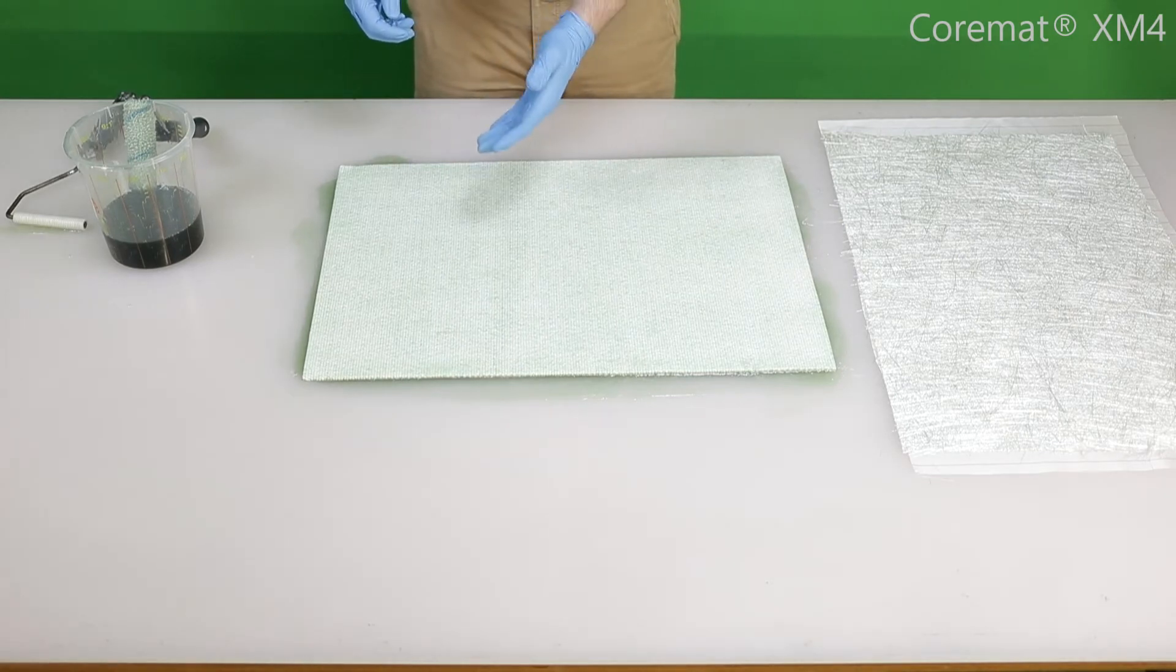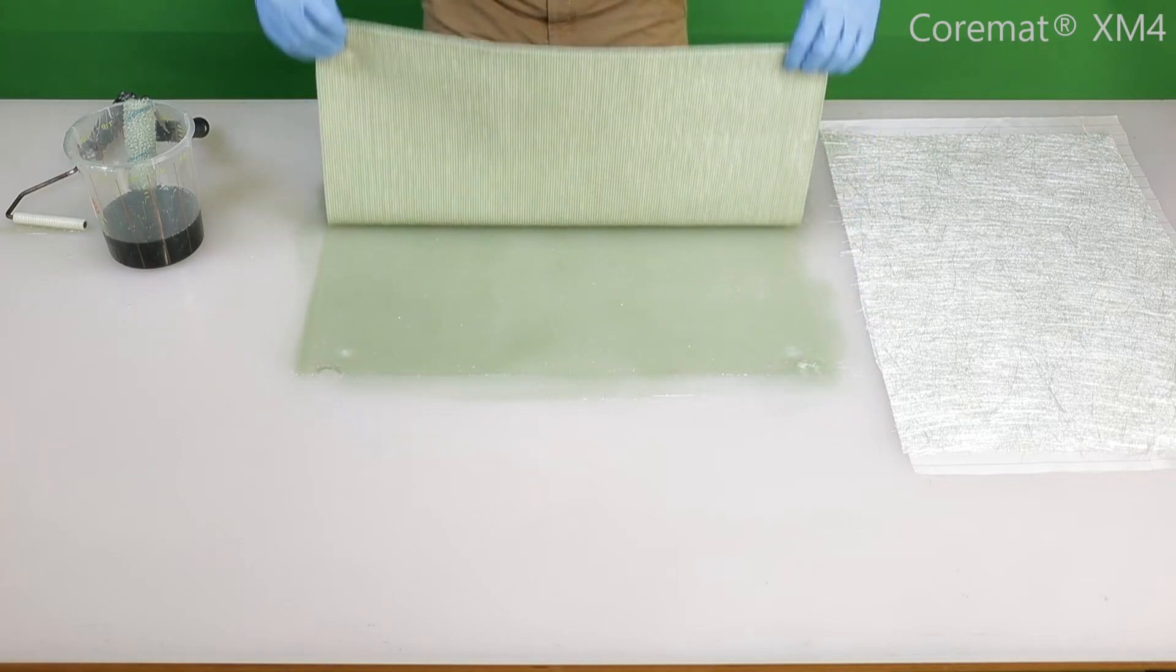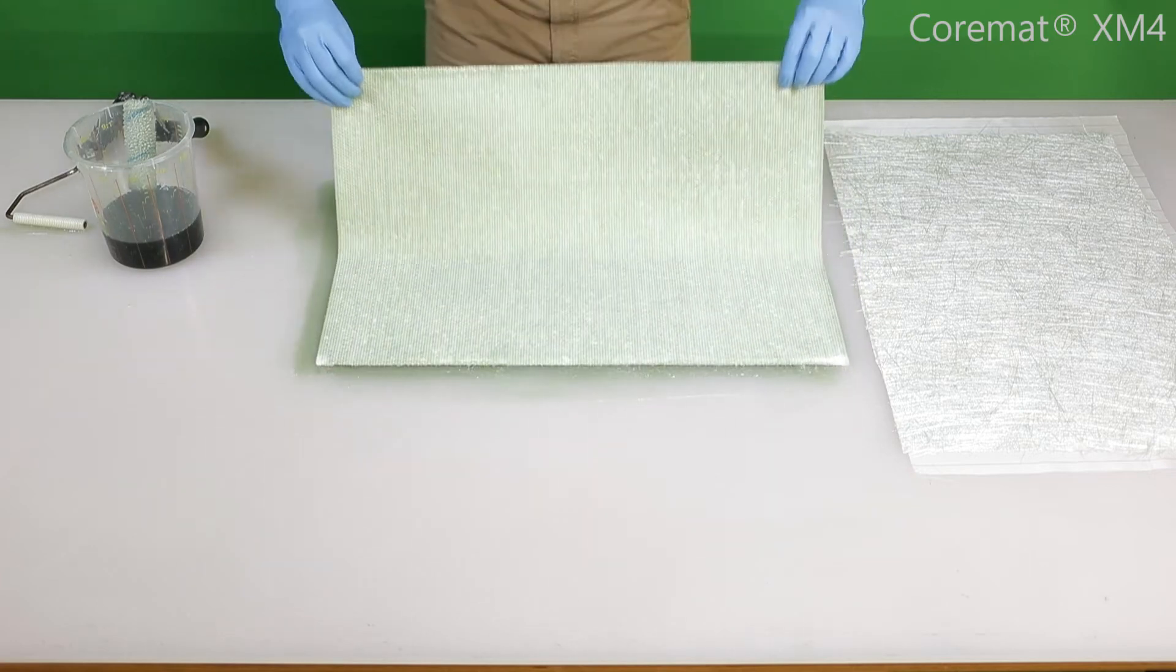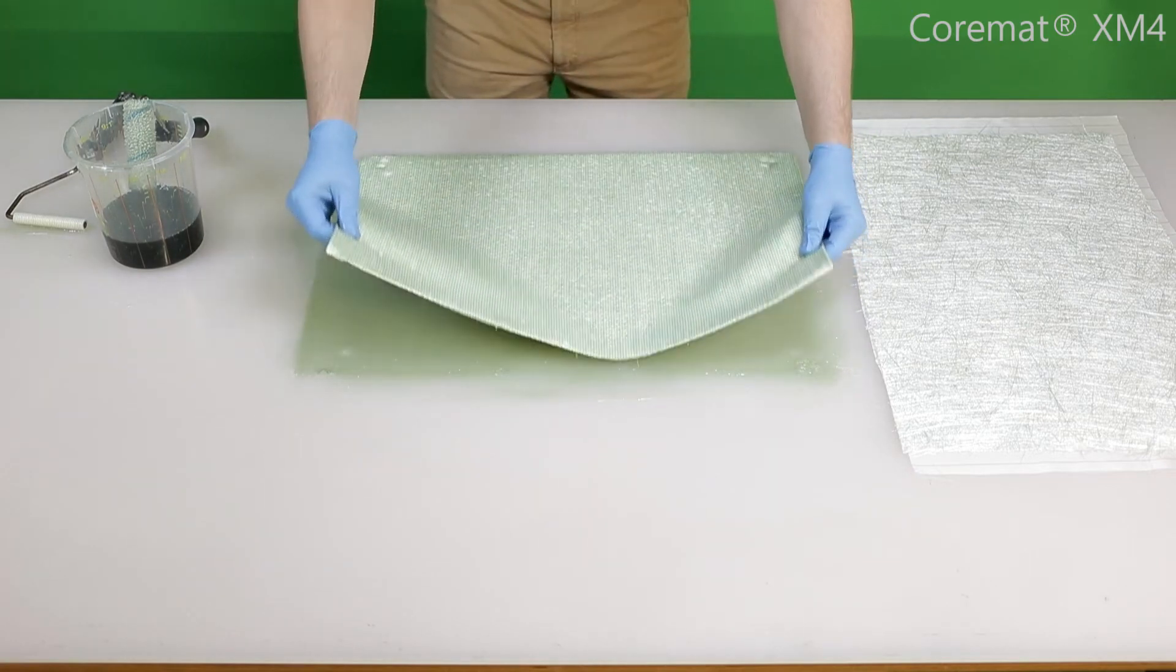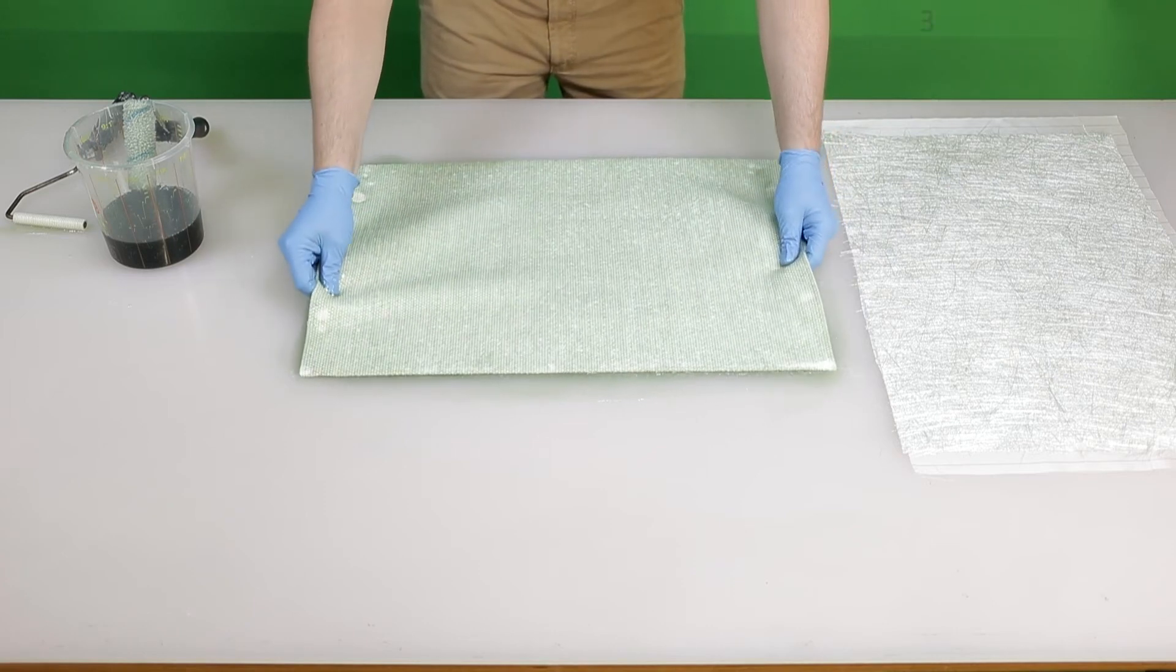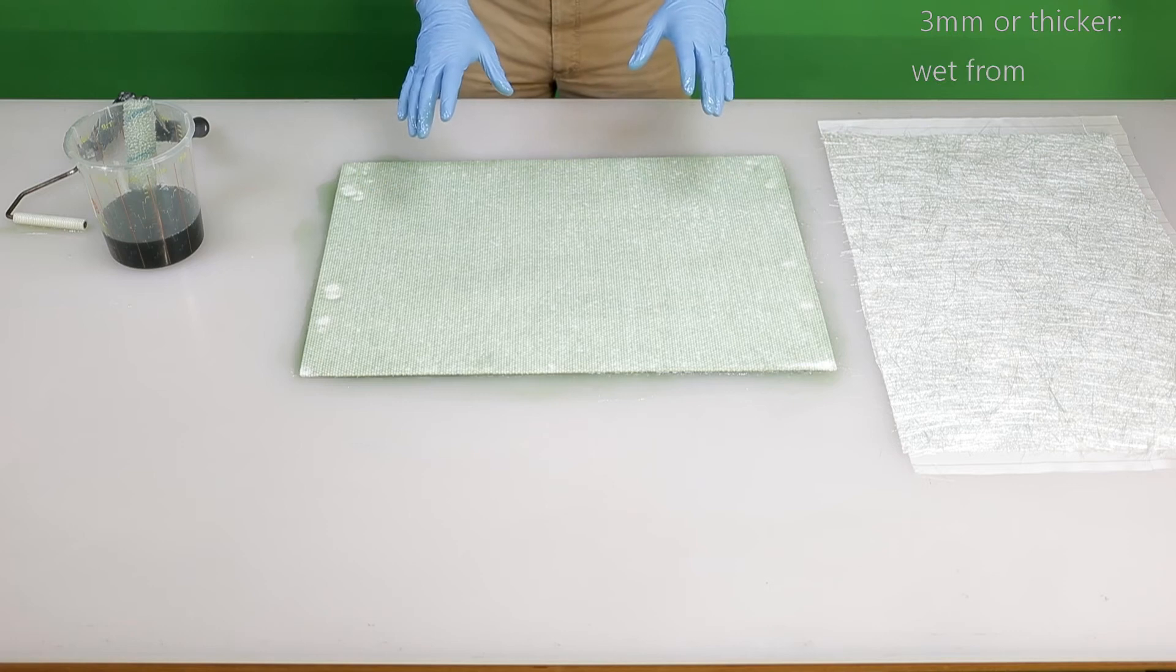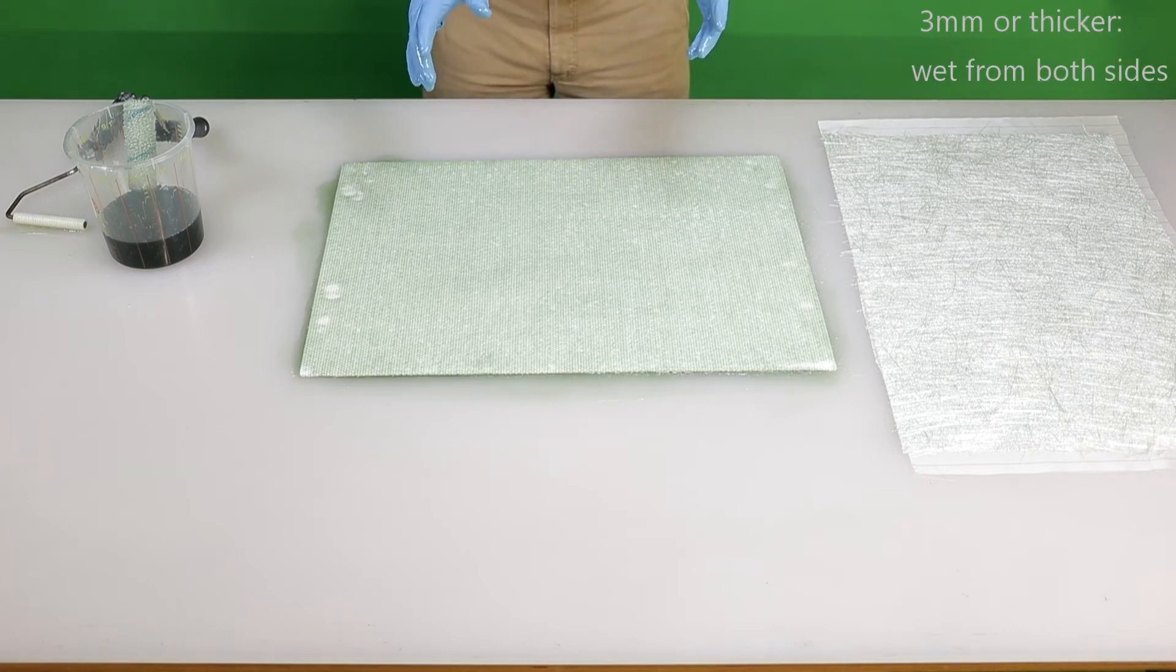When we see resin remaining on the surface, we can turn over the Cormat to the back side and position it on the glass fiber. This should be done for all Cormat products of 3mm thickness or more.